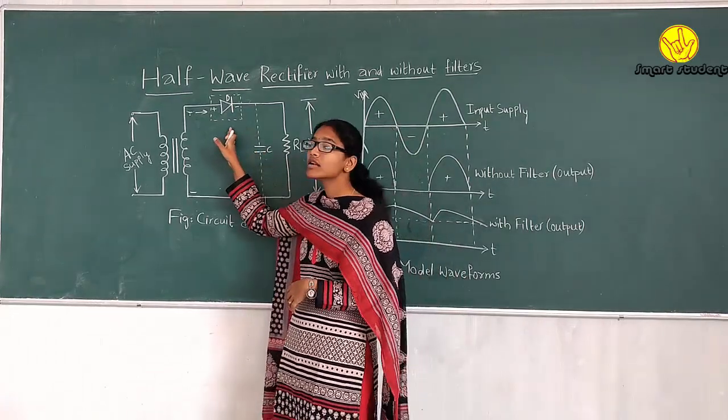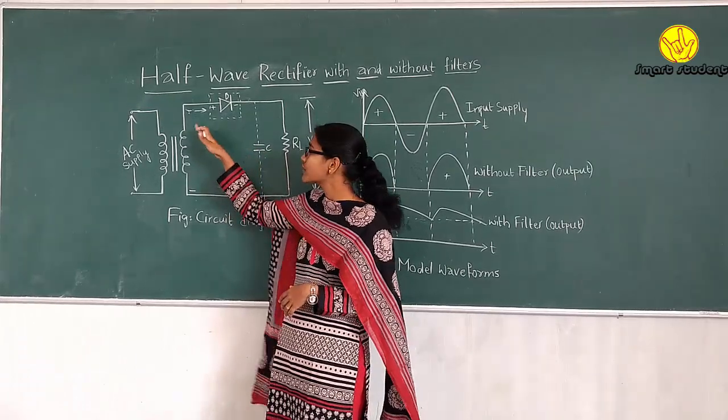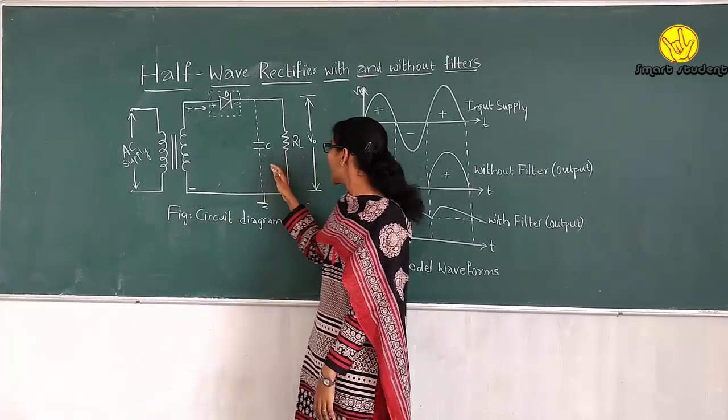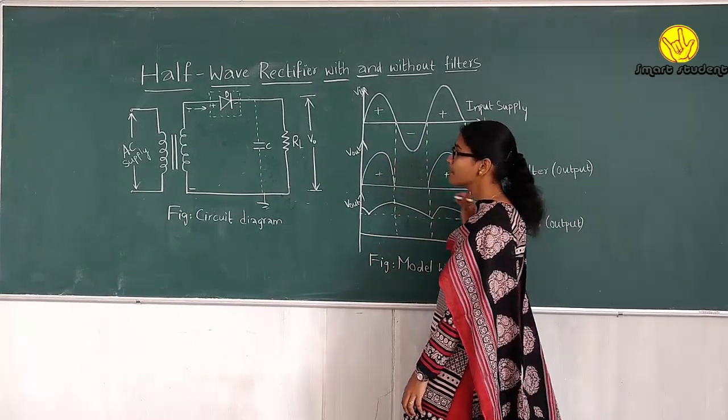When the diode peak voltage is less than the maximum voltage from the input, we get discharging property. And the same continues for next half cycles.